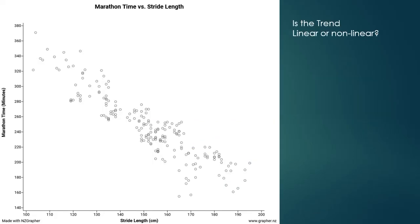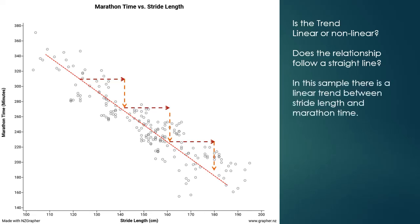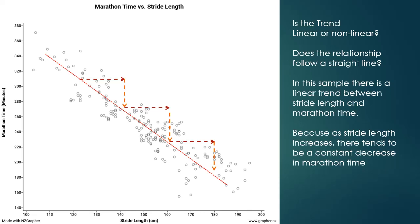Looking at marathon time versus stride length: is the trend linear or non-linear? If we put a line of best fit in, as we increase the stride length by about 20 centimetres, we get a decrease in marathon time of about 40 minutes — a constant decrease each time. So in the sample, there is a linear trend between stride length and marathon time, because as stride length increases there tends to be a constant decrease in marathon time.